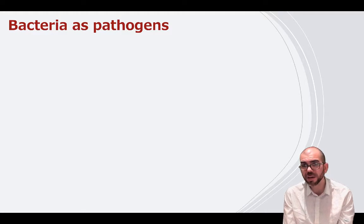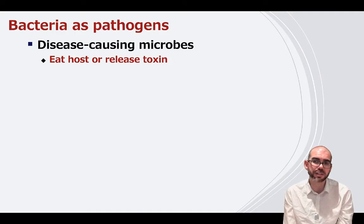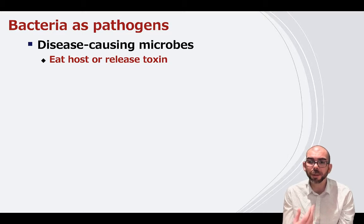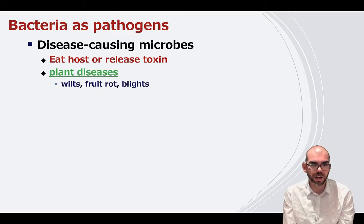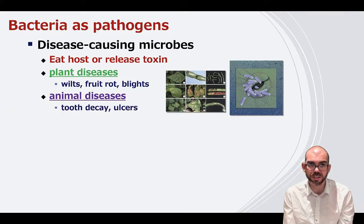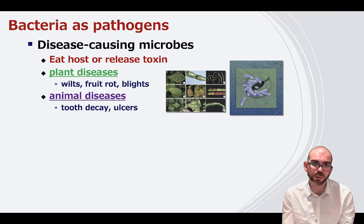Bacteria can be pathogenic — making an organism sick — and do this in one of two ways: either by eating the host or by releasing a toxin. They are notorious for causing plant diseases like wilts, fruit rot, and blights, and for causing animal diseases like tooth decay and ulcers. Your entire digestive tract is lined with bacteria, and if the wrong kind gets in there it can be detrimental to your health.